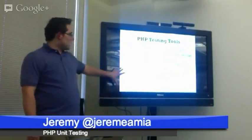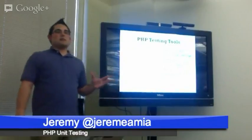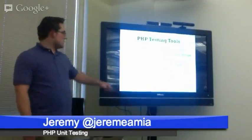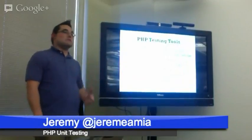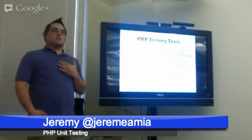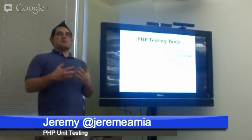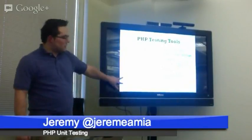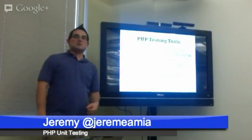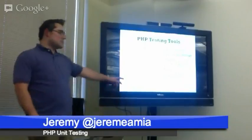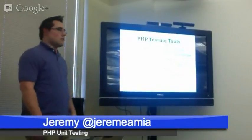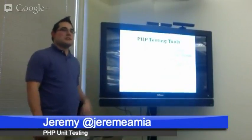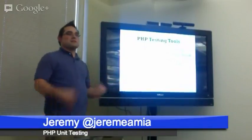We'll also talk about mocking, which is basically creating fake versions of objects. There are several tools for that. PHPUnit has this functionality baked in — I'll be the first to say I don't really like the interface they have for it, it's kind of confusing, but it works. So Mockery and Phake are other projects created by people who felt similarly and decided to create their own mocking libraries. You can use these alongside PHPUnit — you don't have to use them separately.